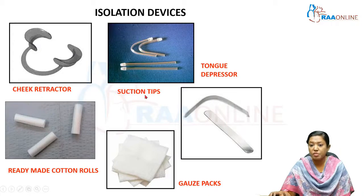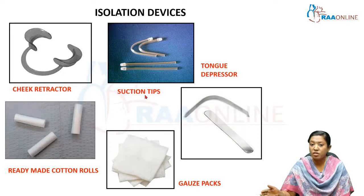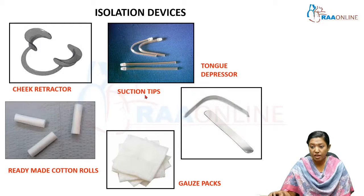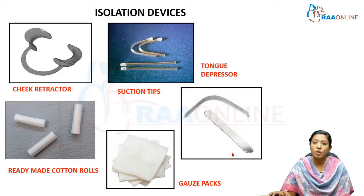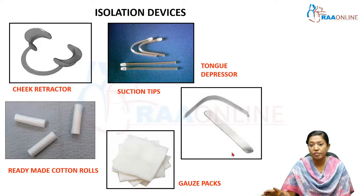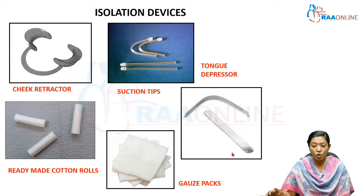Suction tips, or saliva ejectors, evacuate saliva and fall under the category of low volume evacuation. The tongue depressor depresses the tongue, preventing it from coming into contact with the high-speed handpiece when making a Class 1 or Class 2 cavity preparation on lower or upper molars.